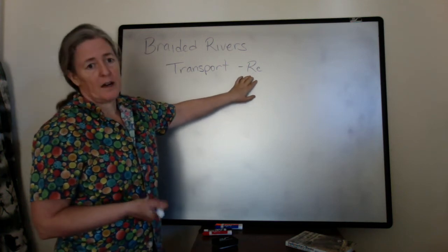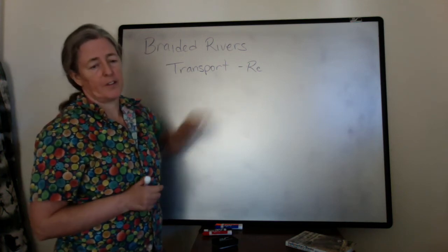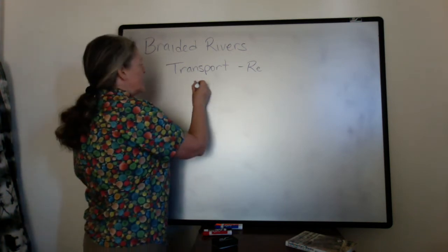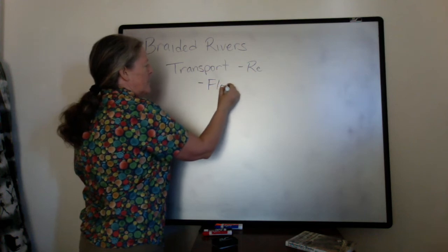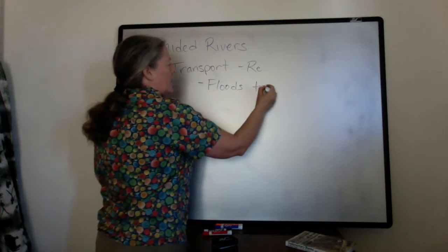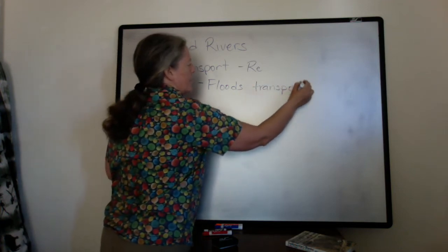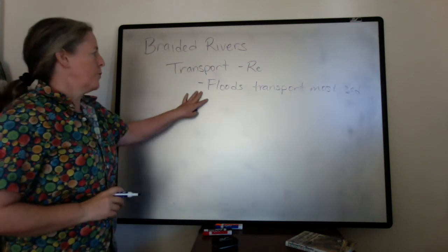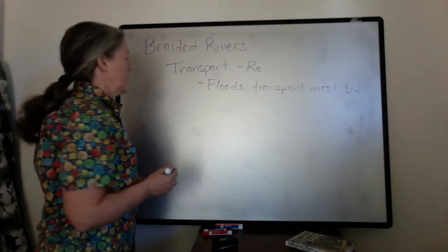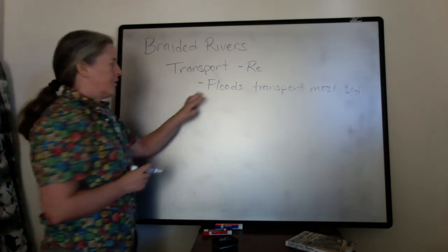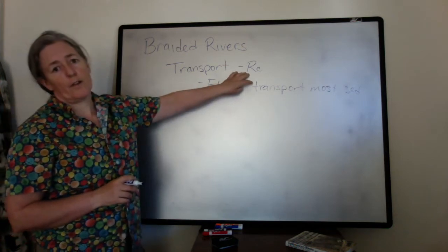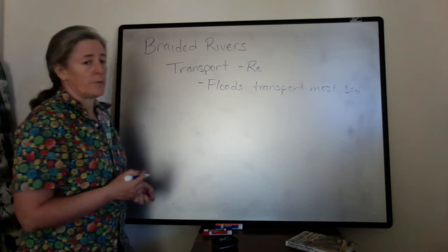When the flow speed is high and the water depth is high, there's more transport. One of the key things for rivers in general is that the floods, where the flow speed and water depth are highest, transport a lot of the sediment. The floods are the things that really shape the overall geometry of the river and the channels, and they control the maximum grain size because that's when the Reynolds number is highest and you can get the transport of those grains.